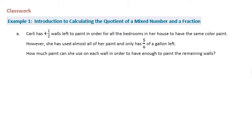Carly has four and a half walls left to paint in order for all the bedrooms in her house to have the same color paint. However, she has used almost all of her paint and only has five-sixths of a gallon left. How much paint can she use on each wall in order to have enough to paint the remaining walls?